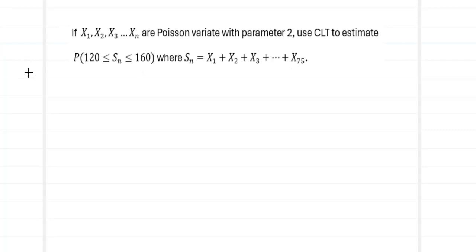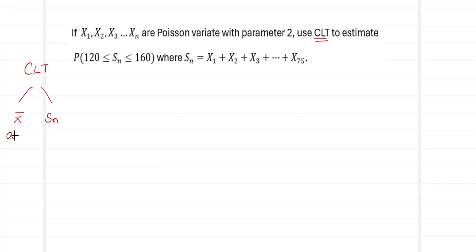The central limit theorem can be used for estimation of two kinds of data. One is x_bar and the other is s_n. When you have x_bar, you will be searching for keywords like average or mean. When you want s_n, you will be searching for keywords like sum or total.